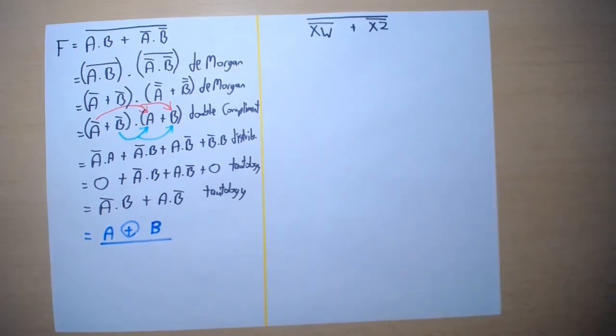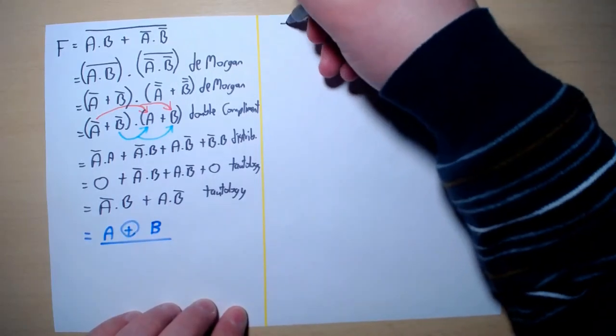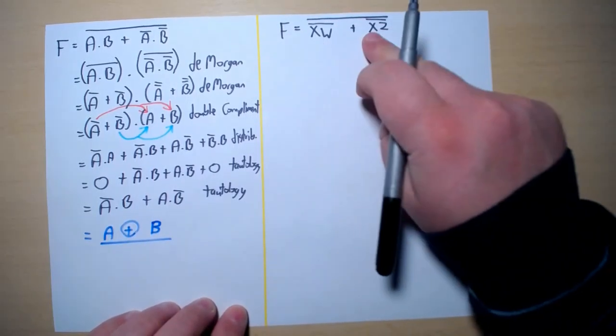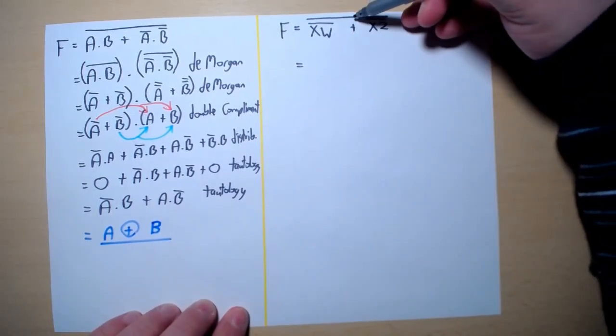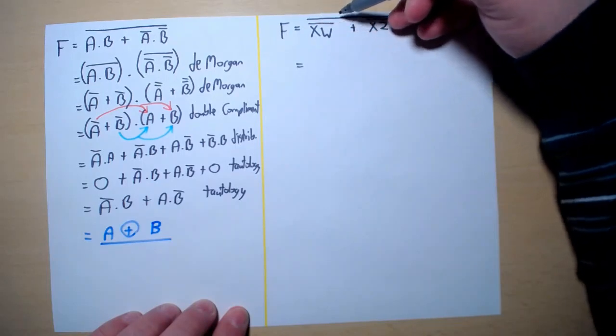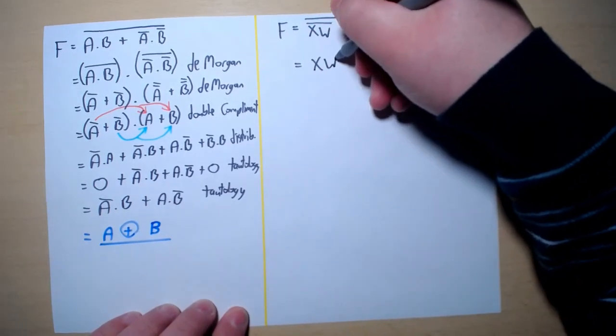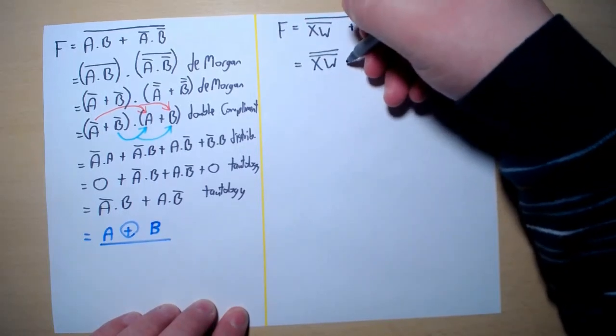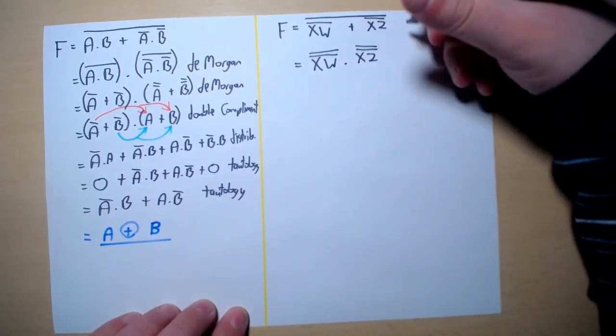I am now going to work out this other example which, as you can see, also includes the use of De Morgan's laws. So let's say we have F equals that. Using De Morgan we can get rid of this large NOT gate, so we will get X W naught naught AND X Z naught naught.